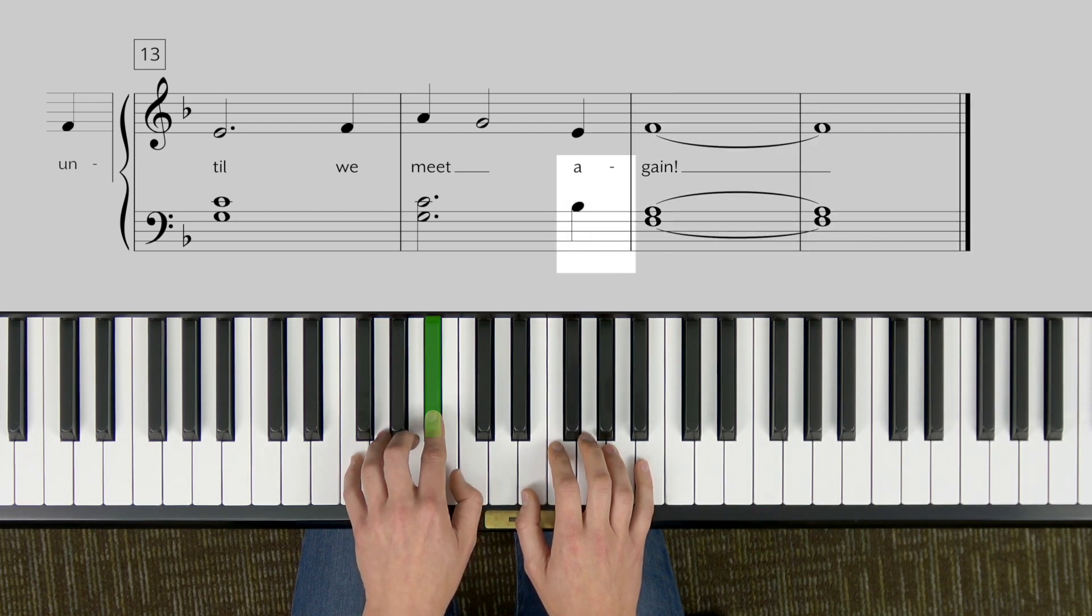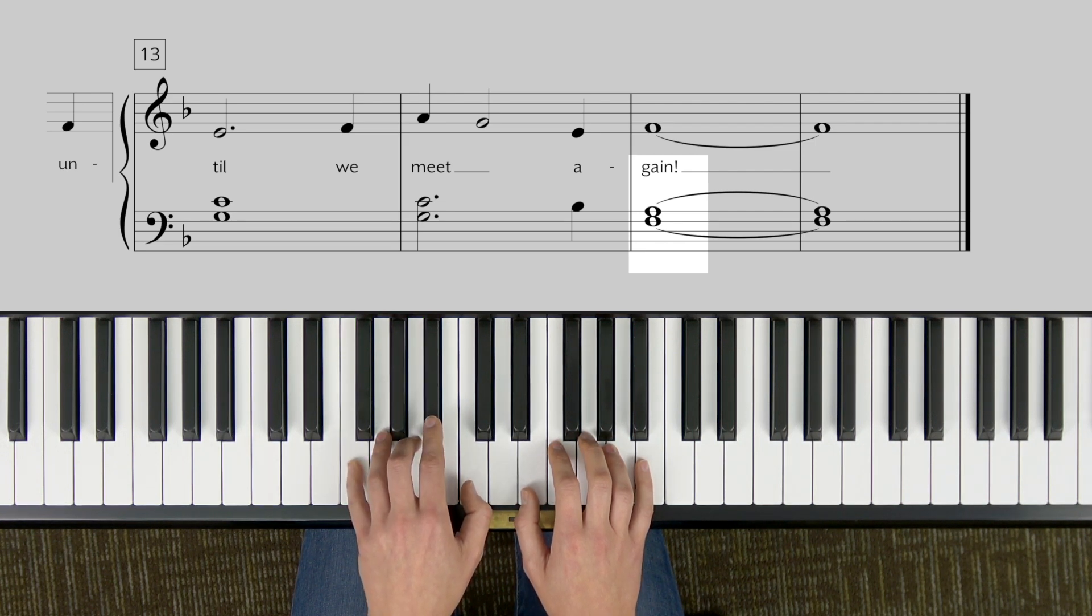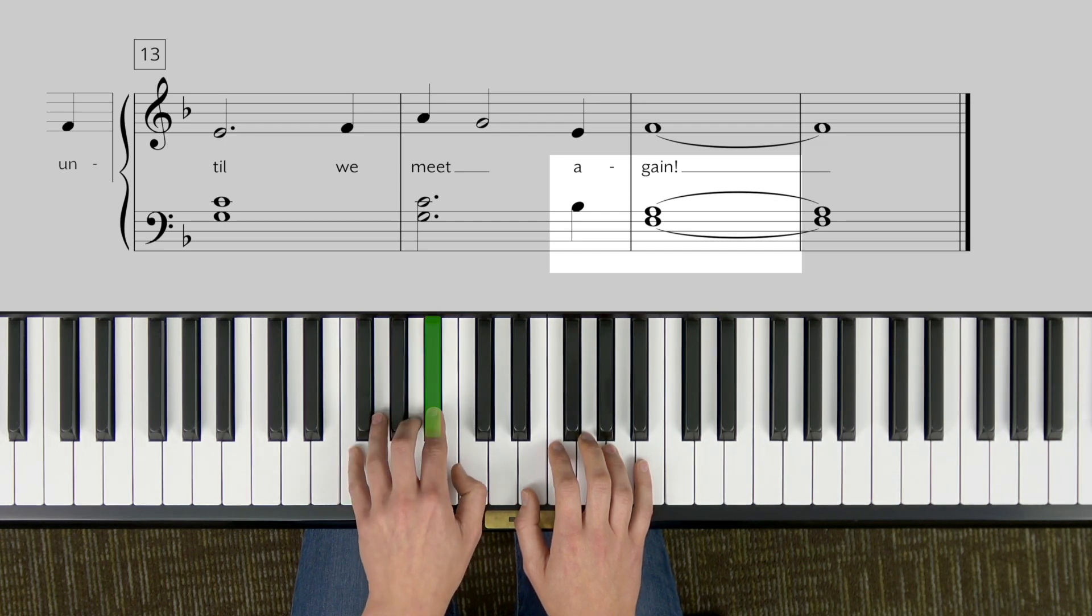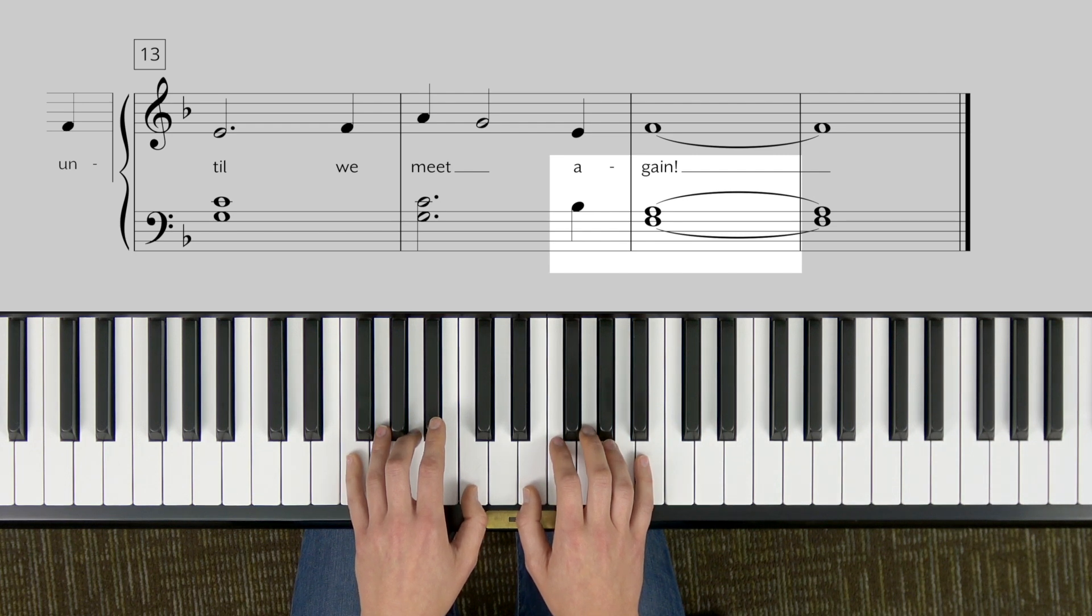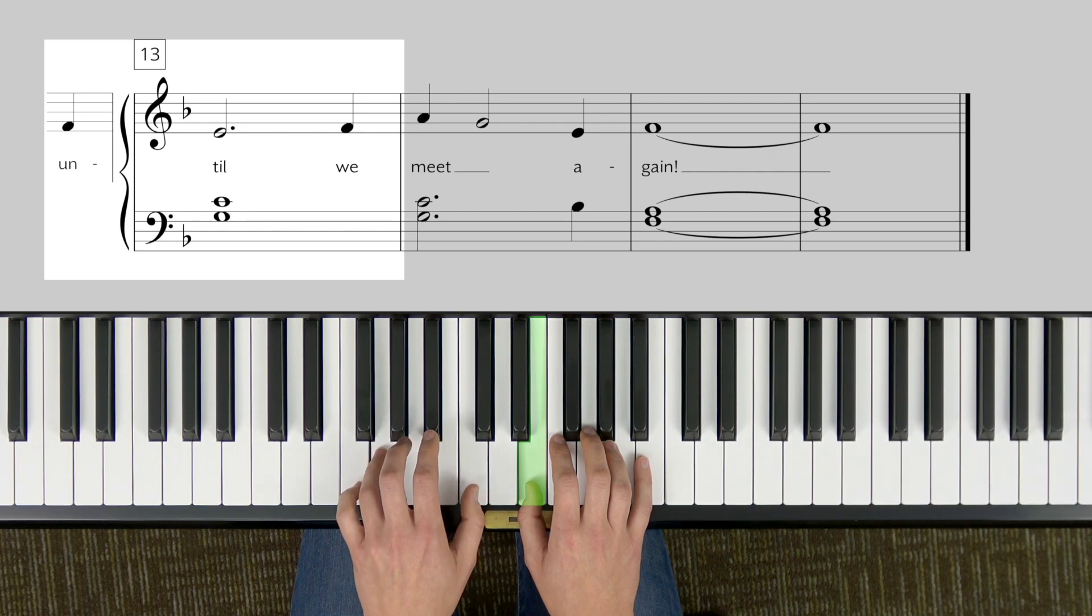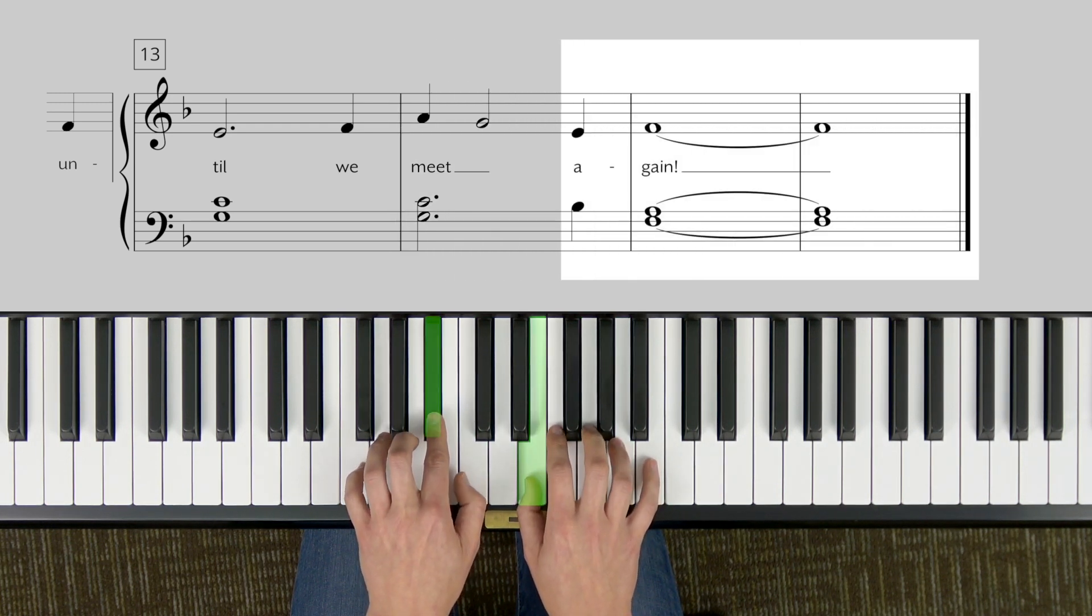So the left hand plays B flat, then F and A. Now it's kind of a hard thing for your left hand to do, so feel free to practice that. B flat, F and A, B flat, F and A, B flat, F and A. Just like that. That's what you should do for all tricky pieces. Okay, so we start on until, until, with one and four finger. Till, we meet, we meet. Now here it is, again.